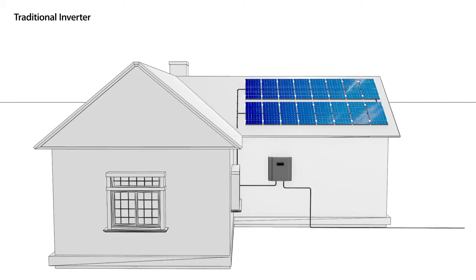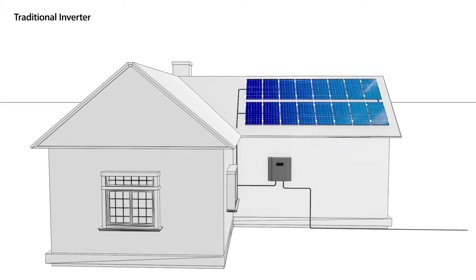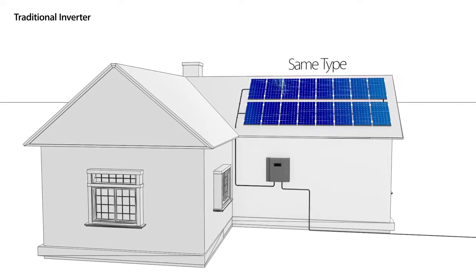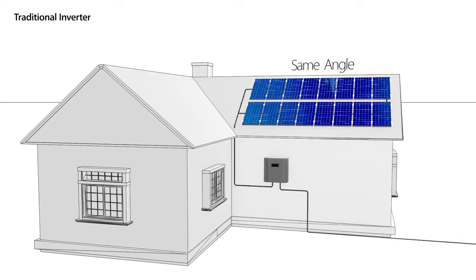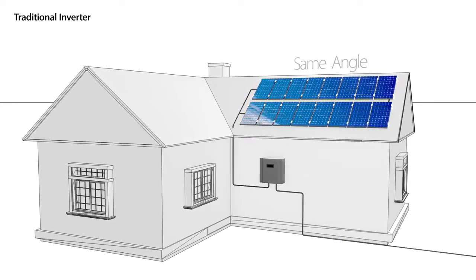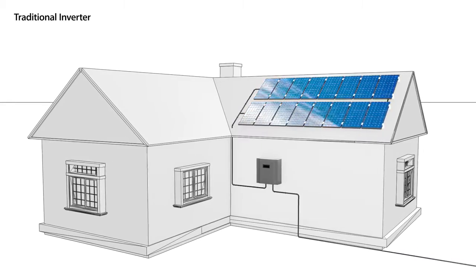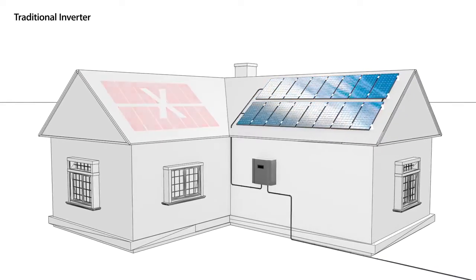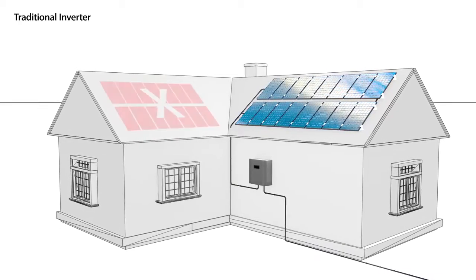The traditional system design requires all strings to be at the same length, using the same type of panels, and to be positioned at the same angle towards the sun. Real-life installation constraints result in either wasted roof space or unnecessary duplication of system components.